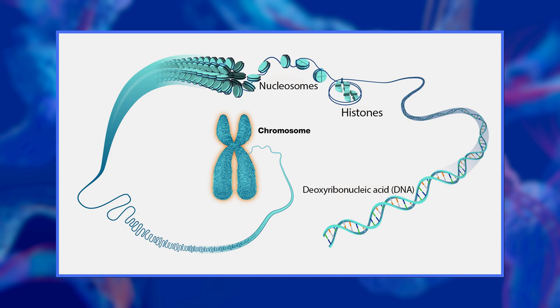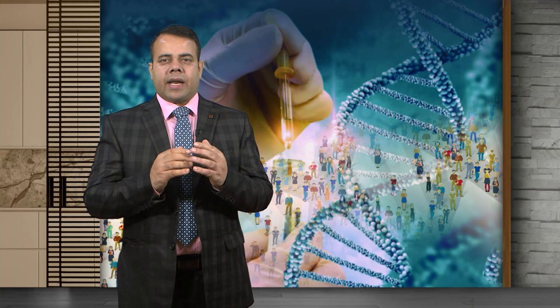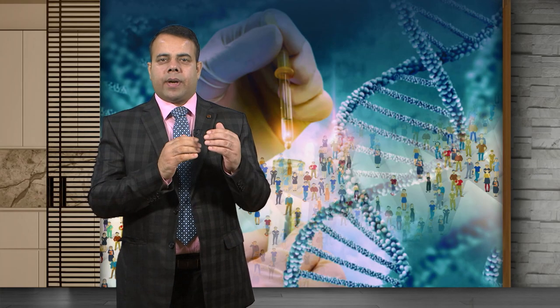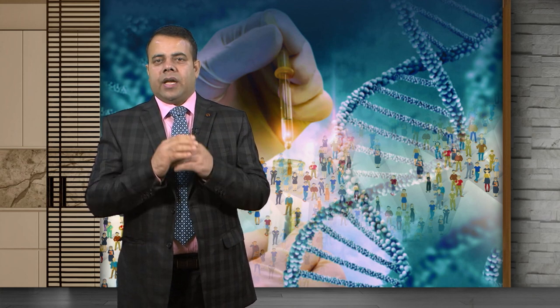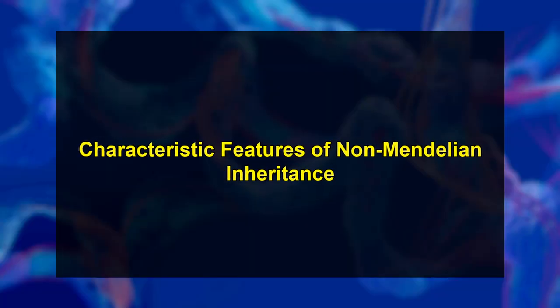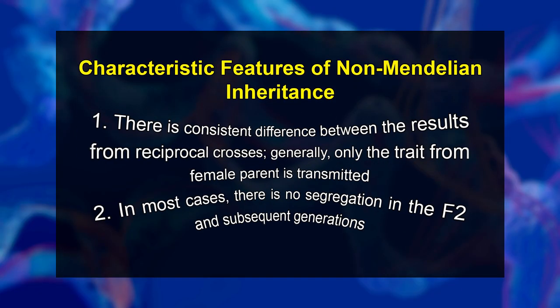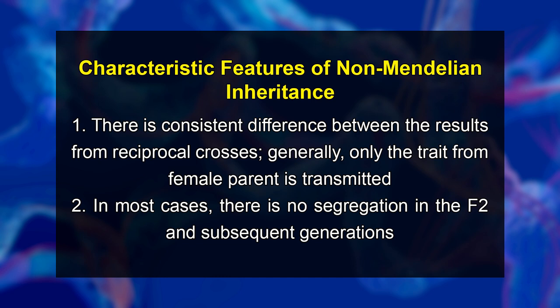Such genes are termed as nuclear genes, or more commonly simply as genes. But some characters in several organisms do not show Mendelian inheritance — they show a non-Mendelian inheritance pattern. In such cases, the following characteristic features are observed: first, there is a consistent difference between the results from reciprocal crosses, and generally only the trait from the female parent is transmitted; and second, in most cases, there is no segregation in the F2 and subsequent generations.